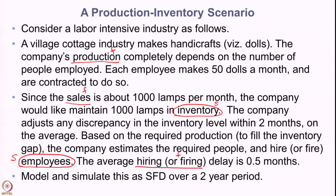Going back to the description: production completely depends on the number of people employed, and each employee makes 50 dolls a month. So if we know the number of employees and their productivity, production can be computed as employees times productivity. The company would like to maintain 1000 dolls in inventory — that is the desired inventory level. If there is a gap between the desired and actual inventory level, the company adjusts the discrepancy within 2 months.